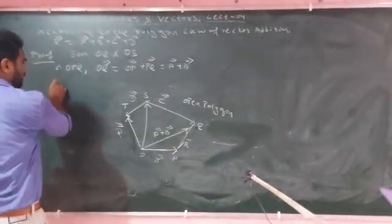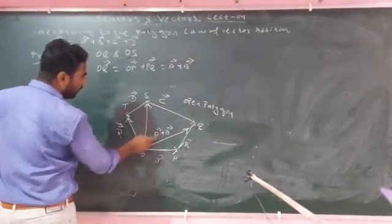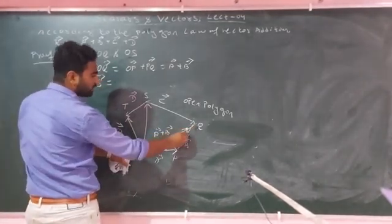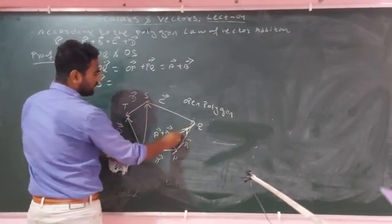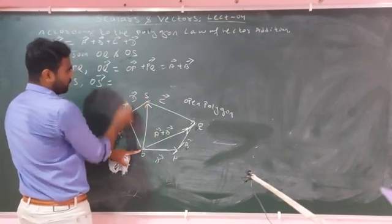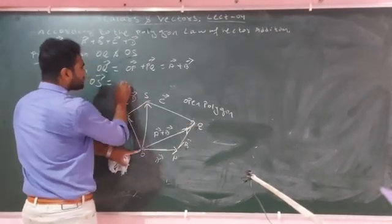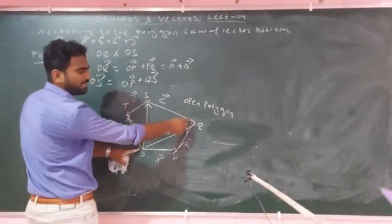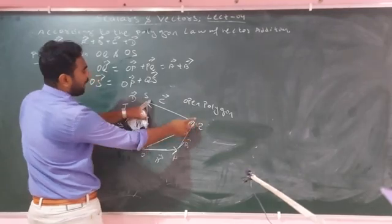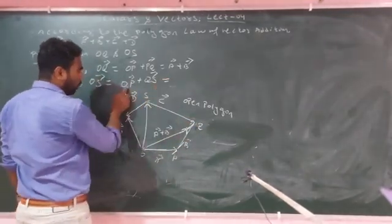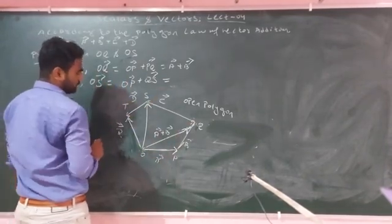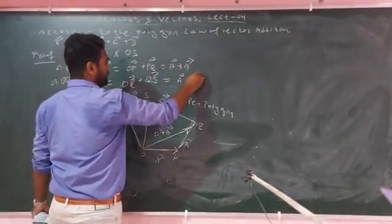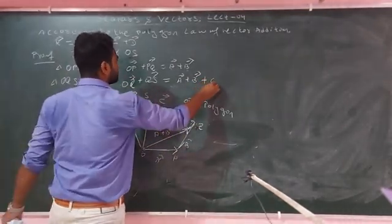In triangle OQS: OQ vector plus QS vector gives OS vector. OP and QS are in the same order. OS is the resultant of OP and QS. So OQ plus QS equals OS, which equals A vectors plus B vectors plus C vectors.